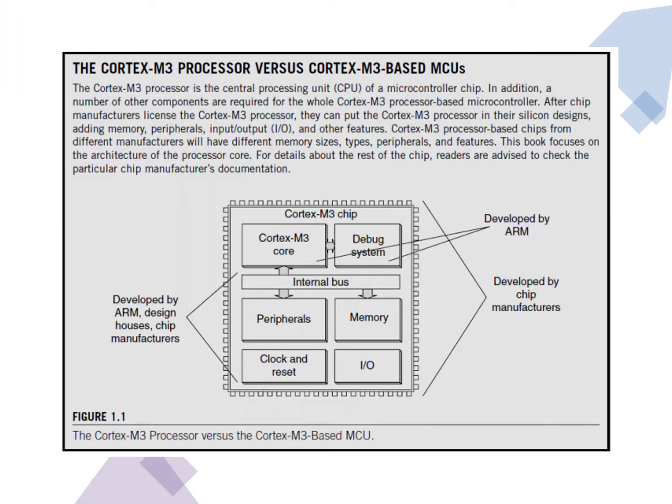Looking at this figure, it describes the Cortex-M3 processor versus the Cortex-M3-based microcontroller unit. If you have any ARM microcontroller from the Cortex-M3 series, it means the CPU of that microcontroller is based on the design provided by the Cortex-M3 microprocessor. Other peripherals are independent of the Cortex-M3 processor but are all embedded on a single chip. Manufacturers need to obtain a license to use the Cortex-M3 design.